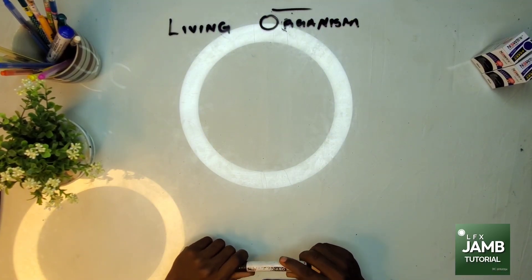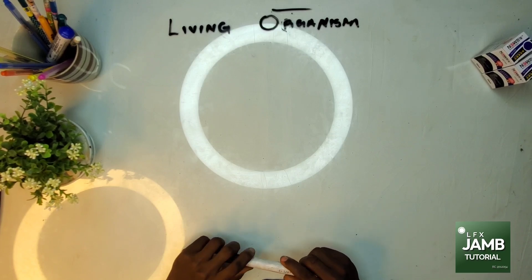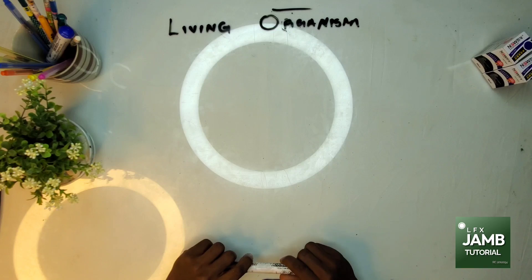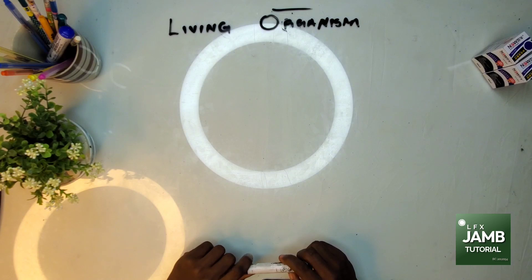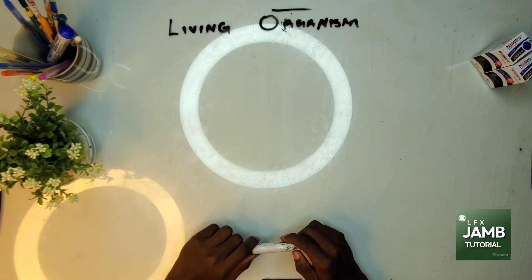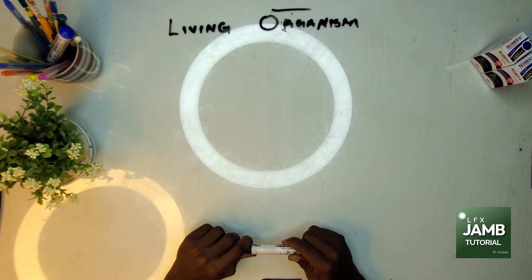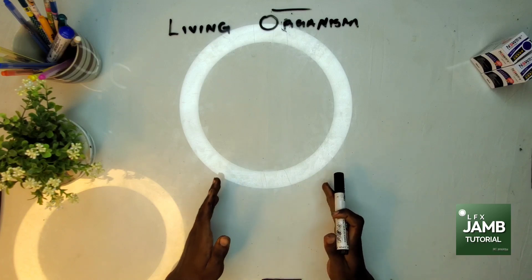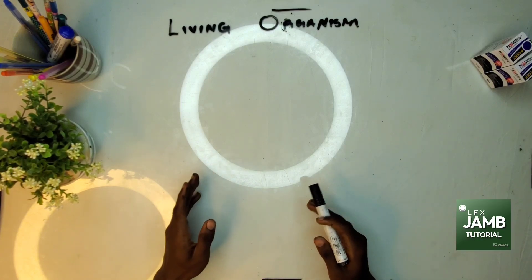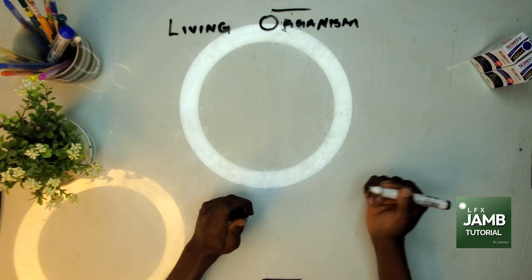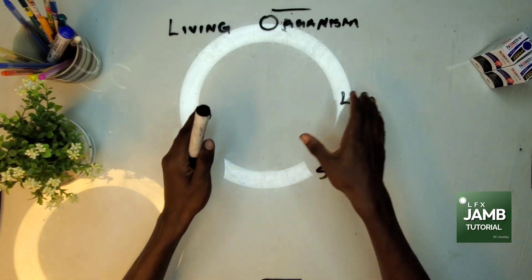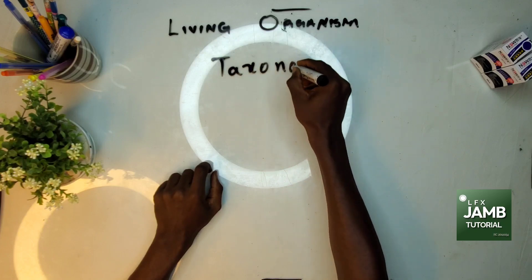Hello friends, welcome to the LFX online tutorial. My name is Master Jaffet. Today we will be dealing on living organisms. If you have ever wondered, there are billions and billions of living things on earth. Of course, a living thing is anything that has life in them. Living things cannot all be placed on the same order — a lion cannot be compared to a snail. Today we'll be dealing on the classification of all living things: taxonomy.